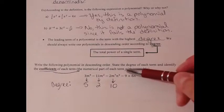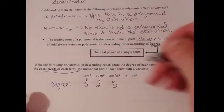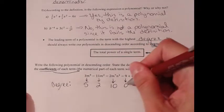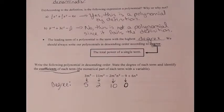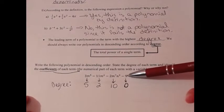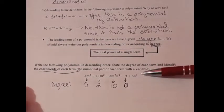The fourth term is negative nine — there's no variable, so this is degree zero. It doesn't go away; we're just classifying it. Think of it as negative nine times m to the zero power, and anything to the zero power is one (except zero), so it's still negative nine. Our last term is 6n to the fourth, where the power is four.